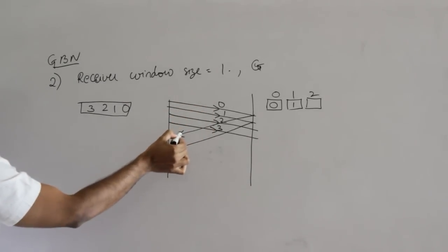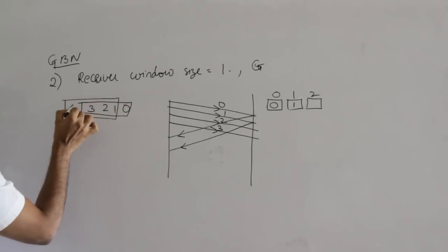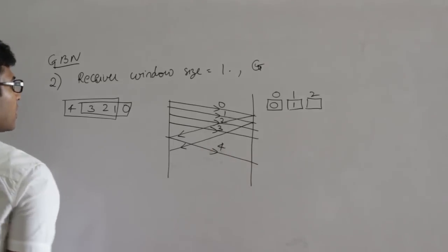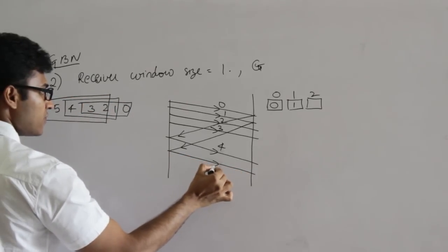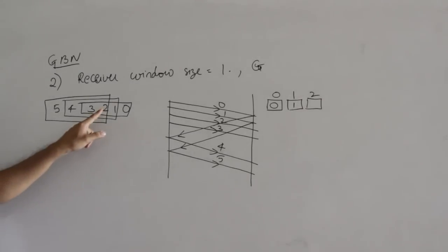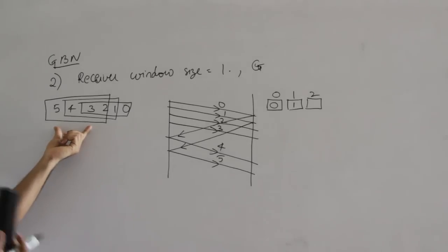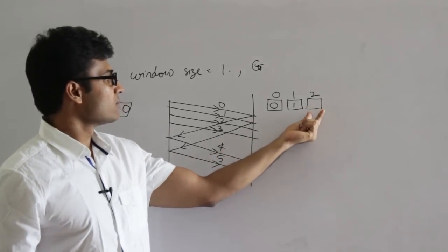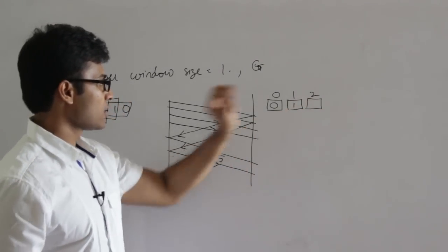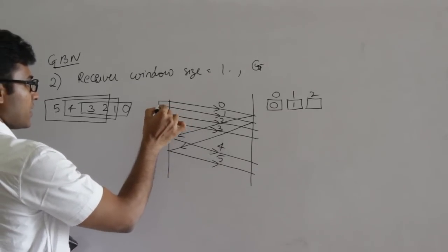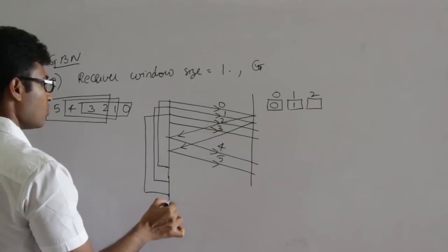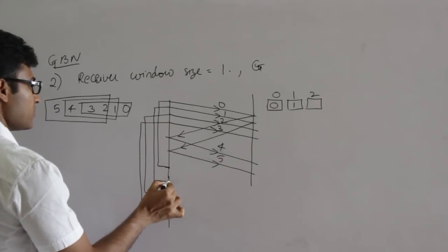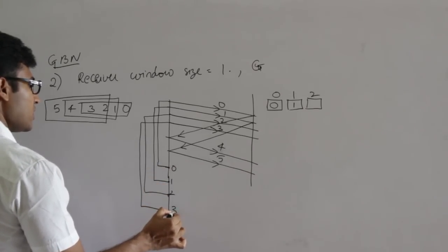At the sender side: once packet 0 is acknowledged, it sends packet 4. Once packet 1 is acknowledged, it sends packet 5. So packets 2, 3, 4, 5 are currently under transmission — sent but not yet acknowledged. The receiver is expecting packet number 2. For every packet there is a timeout timer: timeout timer for 0, for 1, for 2, for 3. If we don't get acknowledgement within these timeout timers, we retransmit the packets.